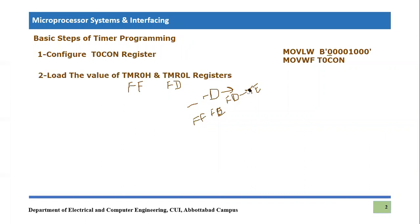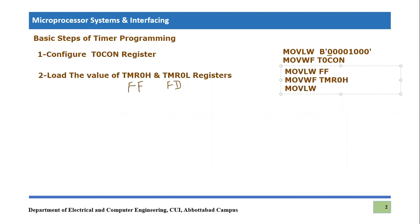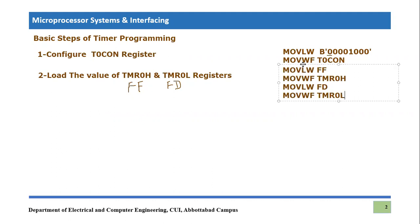So we always load the higher byte into Timer Zero H first, then the lower byte into Timer Zero L. The code is: MOVLW 0xFF, then MOVWF TMR0H. Then MOVLW 0xFD, then MOVWF TMR0L. This is how we load the Timer Zero H and Timer Zero L registers.